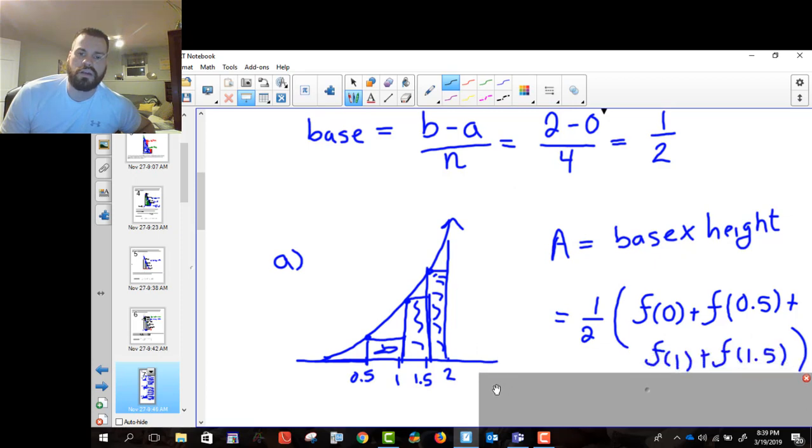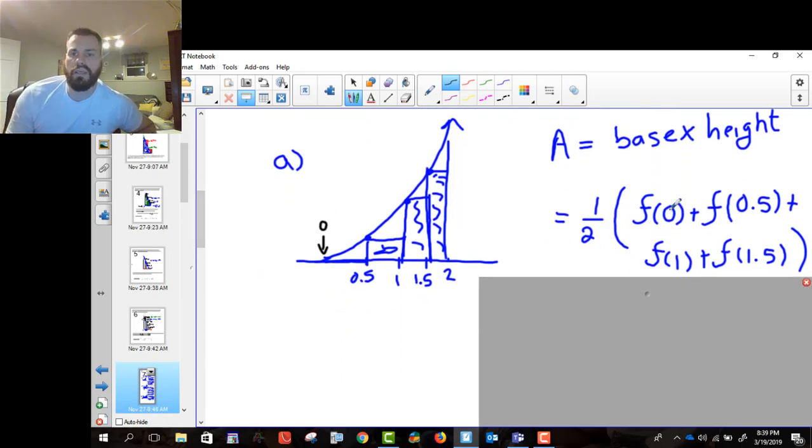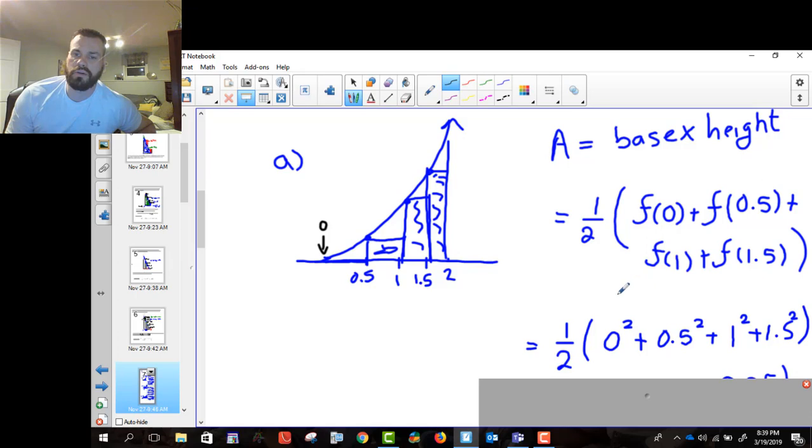And the heights, they start at the left endpoint. So they start at 0, and they go up by 0.5. So 0.5, 1, and then 1.5. That's the left endpoint. And then what we do is we actually plug in 0, 0.5, 1, and 1.5 into our function. So our function is x squared, you remember? f of x is equal to x squared.